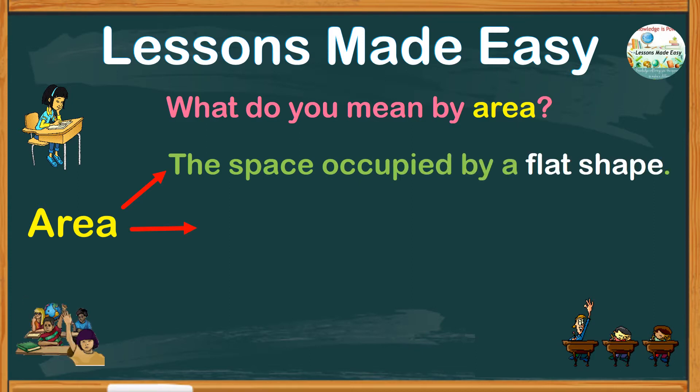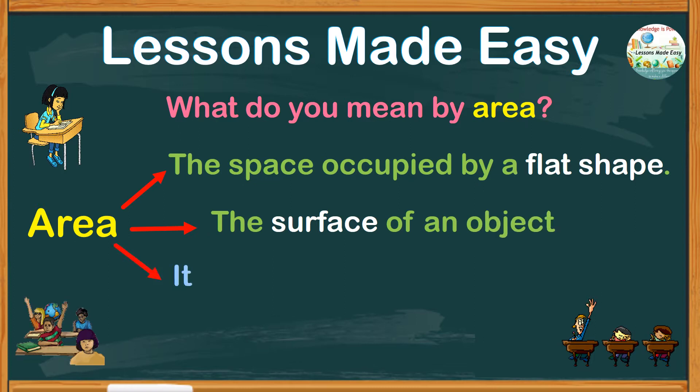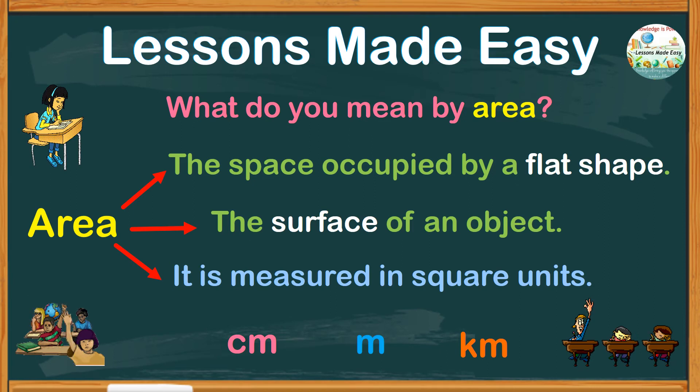We can also say it's the surface of an object, and it is measured in square units. Centimeter, meter, kilometer, these are just some examples of what we call units.